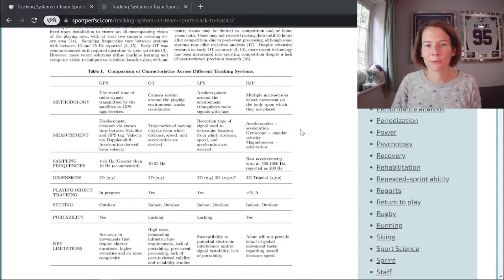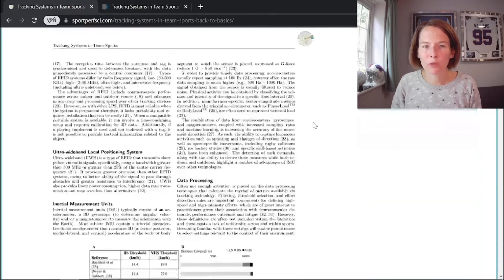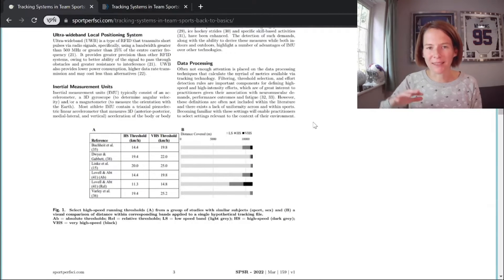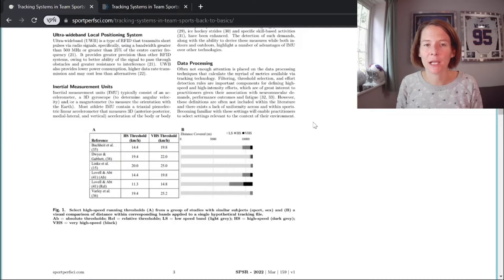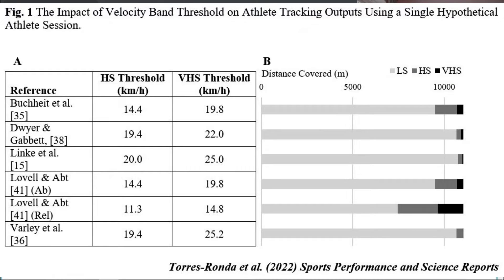You can refer to this table for an overview of the different tracking technologies. We then move on to data processing — a lot of this is under-the-hood work done by the company, but there are important considerations that directly impact the outputs we deal with. Threshold selection is a real challenge in sports science because across many sports and across the different sexes, there is no real consensus on which thresholds should be applied. As demonstrated in this figure, the thresholds selected can massively impact outputs in terms of high speed running, and the same discussion applies to acceleration and deceleration thresholds.